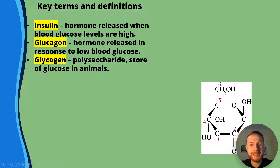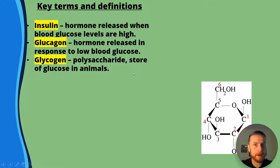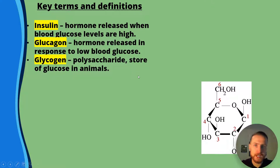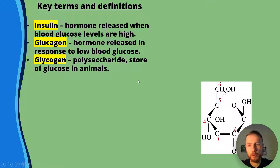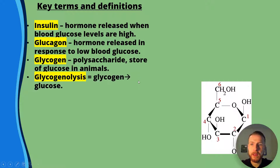Glycogen is a polysaccharide store of glucose in animals. Remember, it's made up of alpha glucose. I've got a video on carbohydrates if you need to learn more about that.